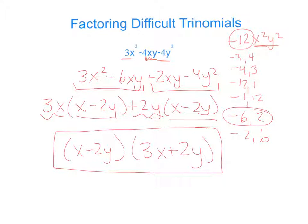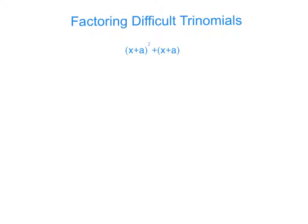So it's the same method. You just have to think a little bit differently about the variables involved. Another way that you can see different trinomials is where you kind of have multiple things squared.